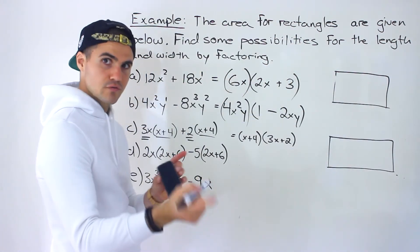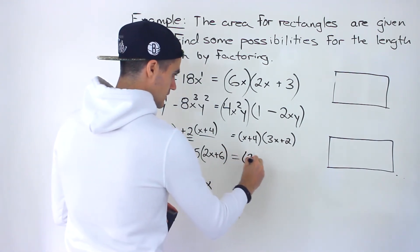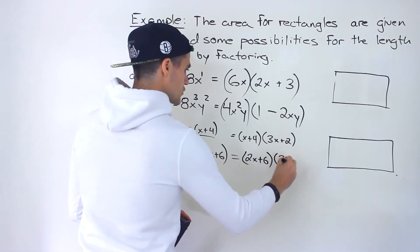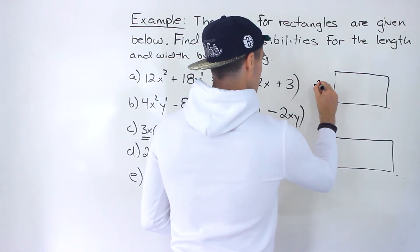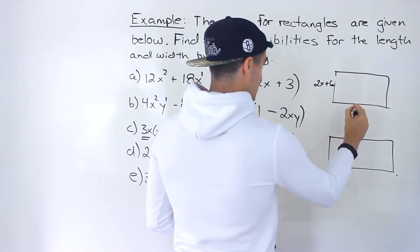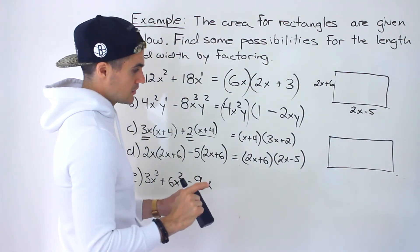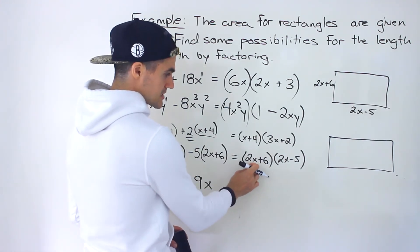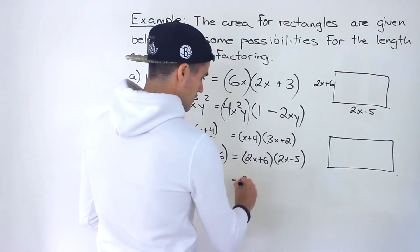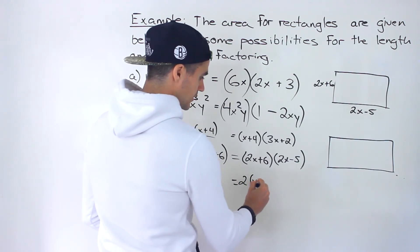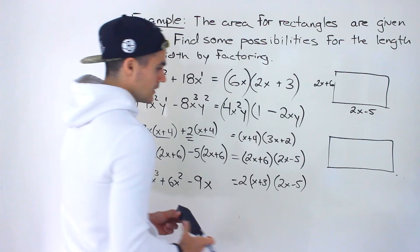For part D, we factor by grouping and take out (2x+6), leaving (2x minus 5). So one possibility is width = (2x+6) and length = (2x minus 5). But notice that from the factor (2x+6), we can further take out a 2, giving 2(x+3). So the expression becomes 2(x+3)(2x minus 5).